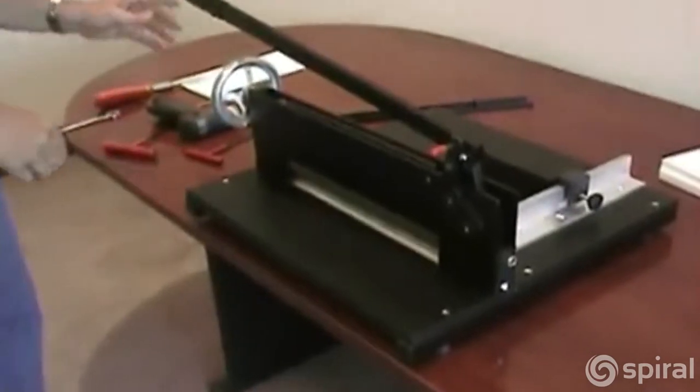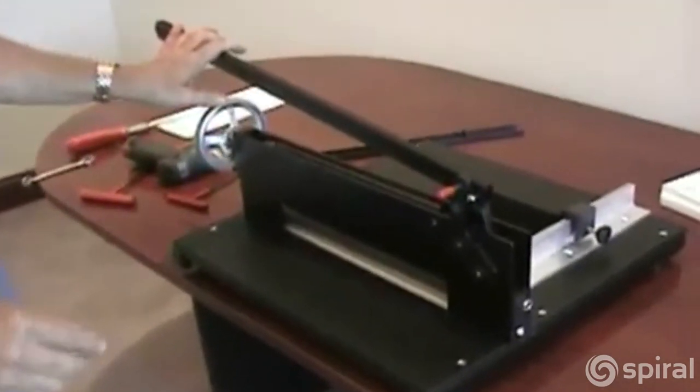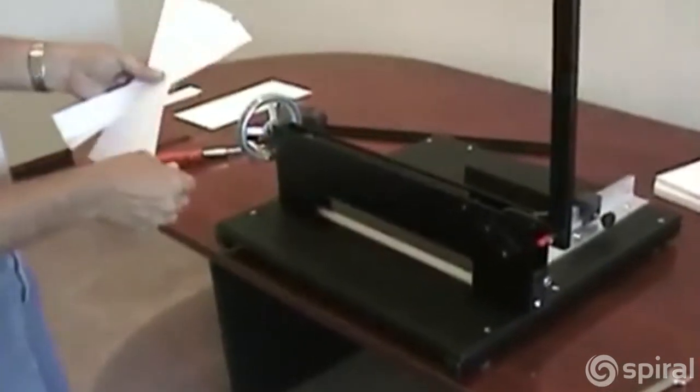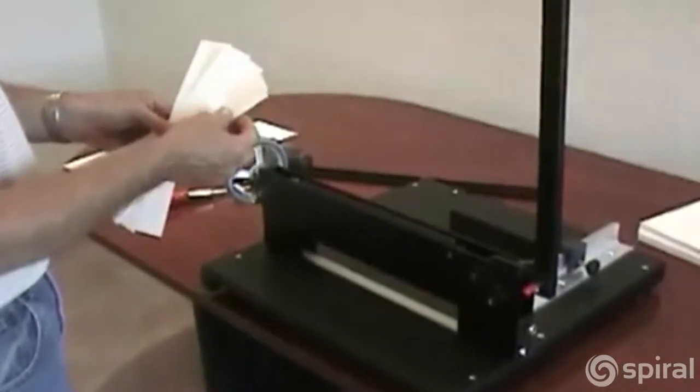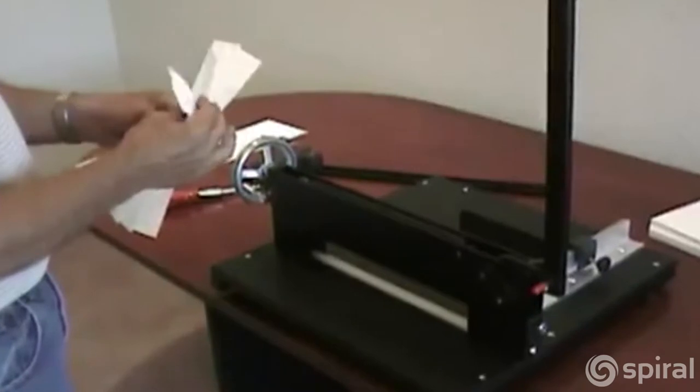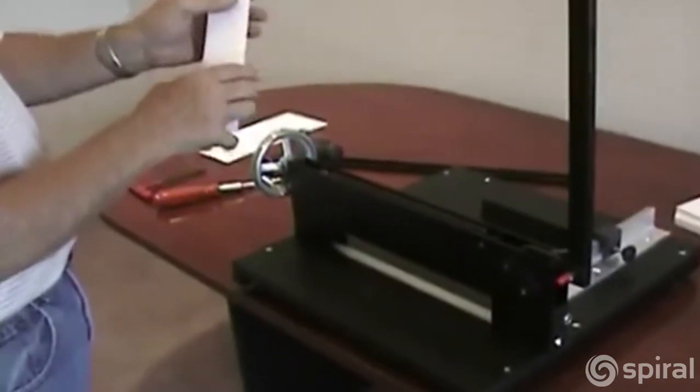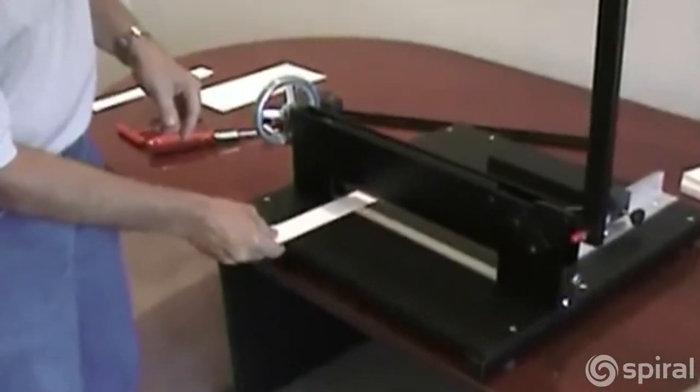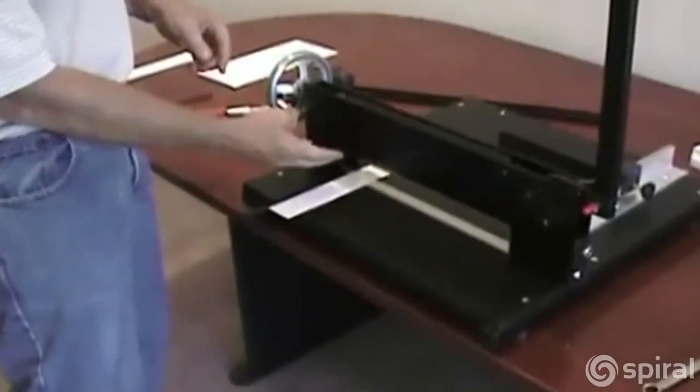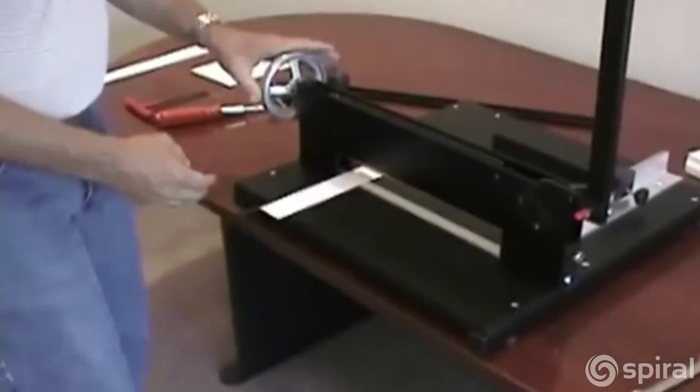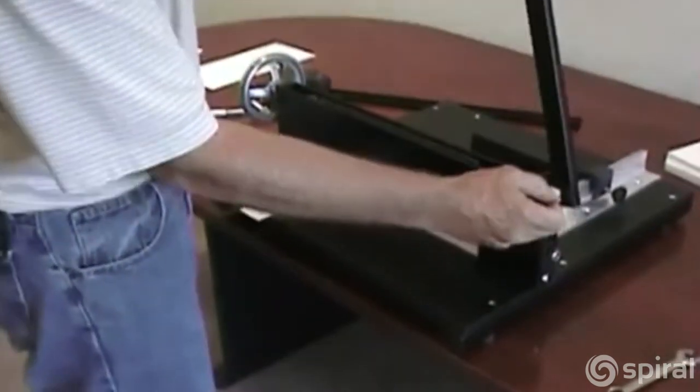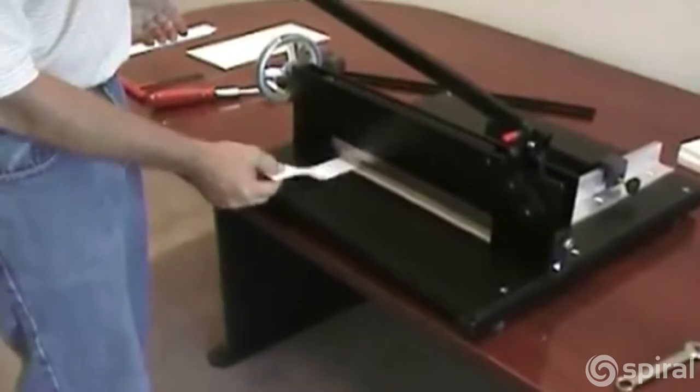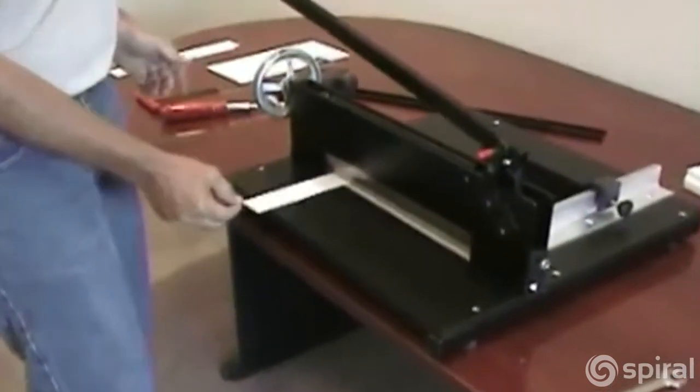We are now going to re-level the blade. Now to level the blade, you need to cut five pieces of twenty pound bond paper, approximately inch to inch and a half wide. Stack them, place it to the left end of the blade closest to the hand wheel. Release the safety and let the handle come down.